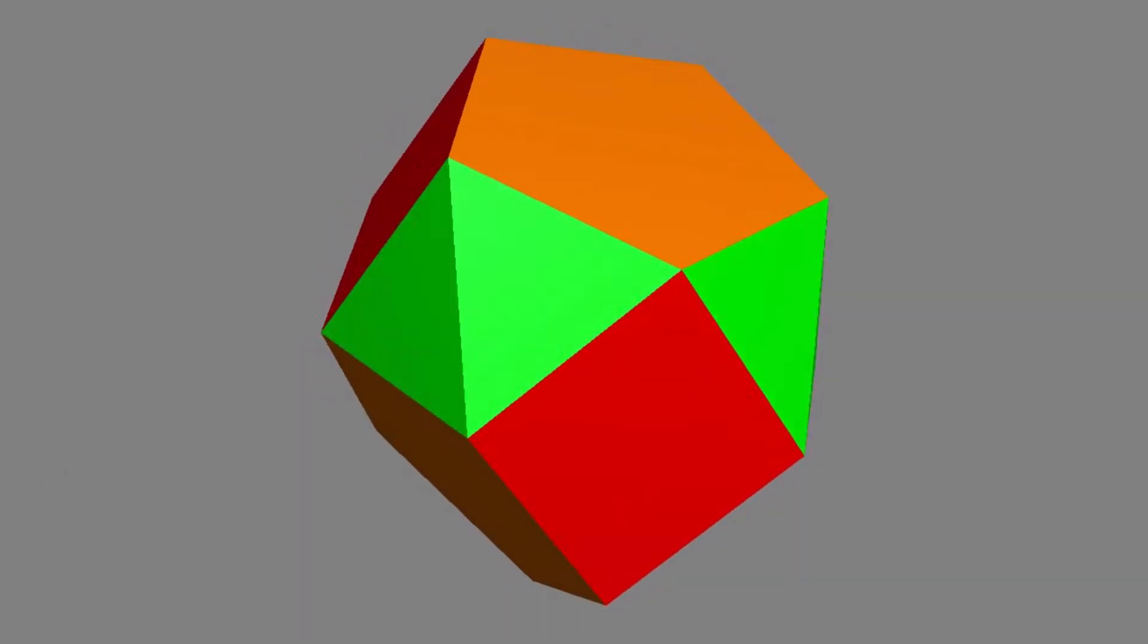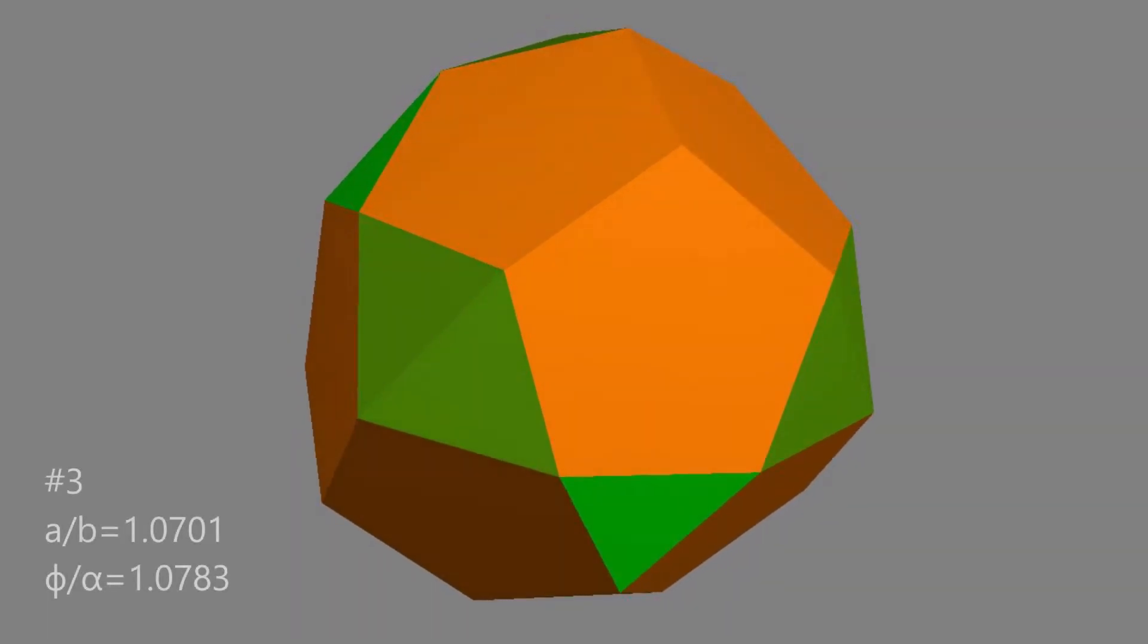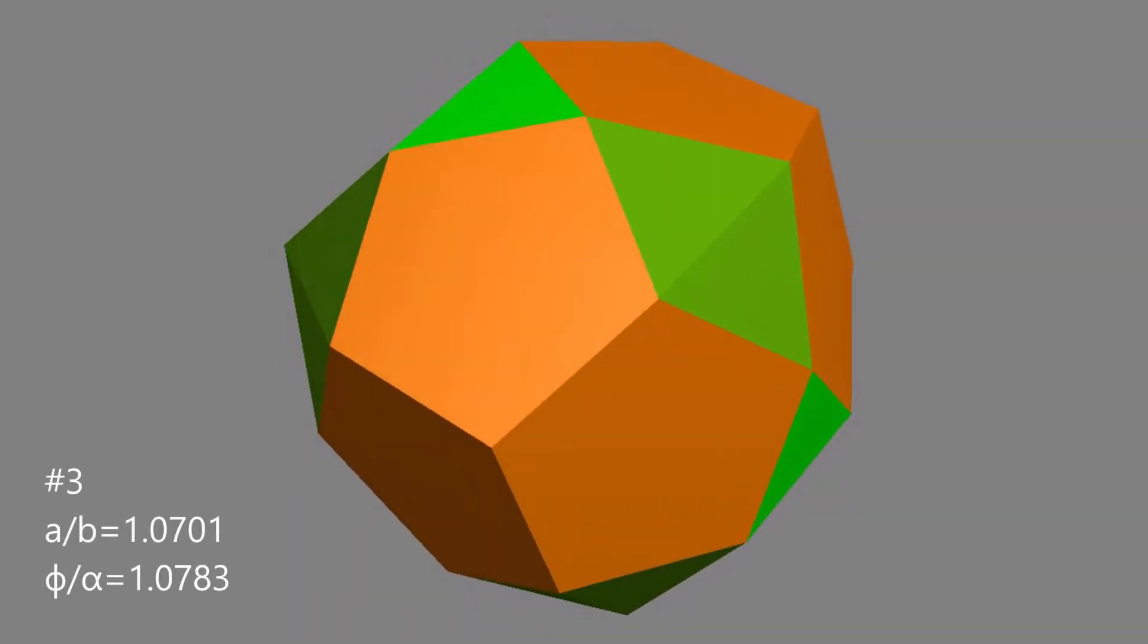Next come the polyhedra with tetrahedral symmetry. Some of these are super close to being actual Johnson solids.